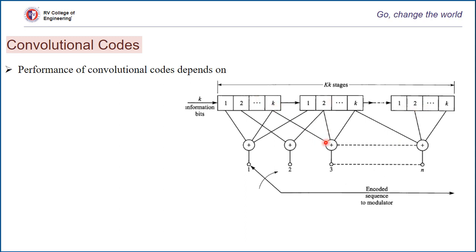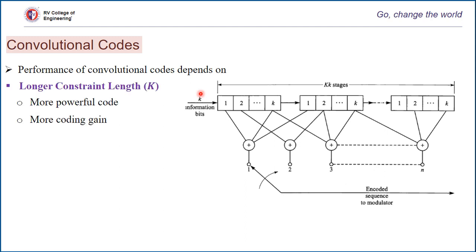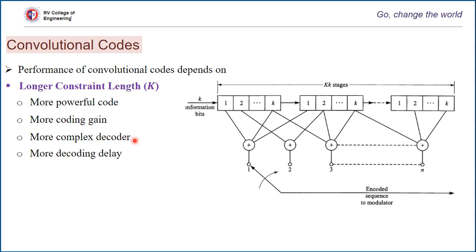The performance of convolution codes depends primarily on two factors: constraint length and code rate. A longer constraint length produces a more powerful code with more coding gain, resulting in a lesser probability of error. However, it also brings more complexity in the decoder, producing more decoding delay — more time is required to decode the original transmitted symbol.